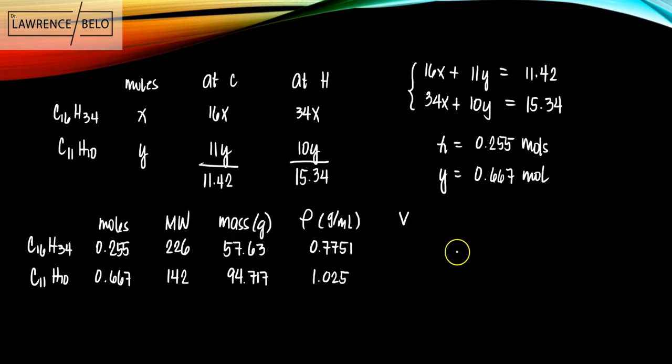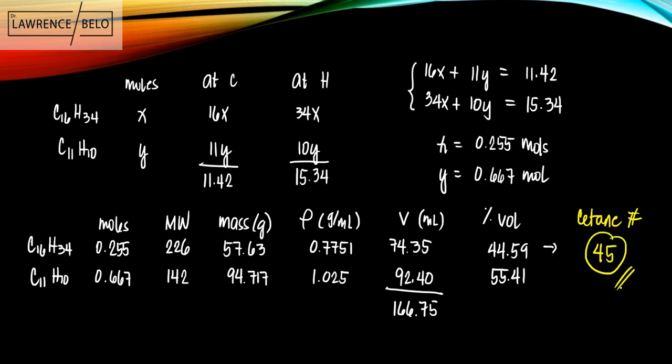So volume is mass over density. You'd be able to solve this one as 74.35 ml and then the other one as 92.40. When you sum this up, this gives us a total of 166.75. Since we are concerned on the amount of cetane in the mixture, let's solve for the percentage by volumes. 74.35 divided by 166.75 gives us 44.59, whereas the other one, 92.4 divided by 166.75 gives us 55.41. So looking at this, we can see that the cetane number is approximately 45. So that is it. Please place comments if you have any questions. Thank you very much.